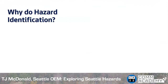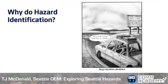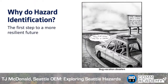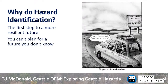So why do we do hazard identification and analyze Seattle's disaster risks? A Far Side cartoon by Gary Larson sums it up well — those poor slugs don't know what's going to hit them. Identifying your hazards is the first step towards a more resilient future, because you can't avoid problems you don't know about and you can't plan for a future you don't know.